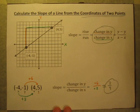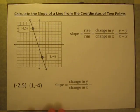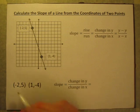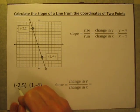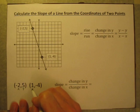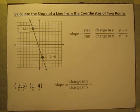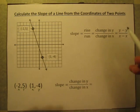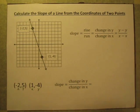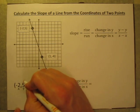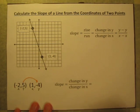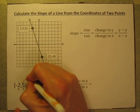Thinking of it in terms of change in y over change in x usually works pretty well. Let's do one more example. So I've got the coordinates again of two points — an x coordinate and a y coordinate. These are two points on a graph. I'm just going to remember that my slope is change in y over change in x. The change in y is going from 5 to negative 4, which is decreasing.